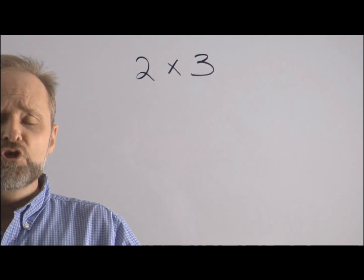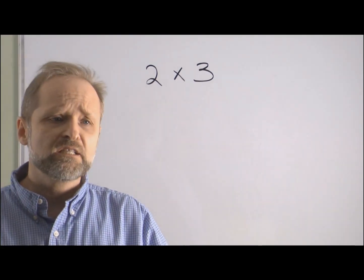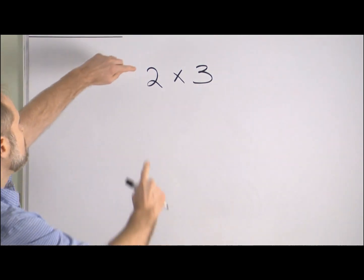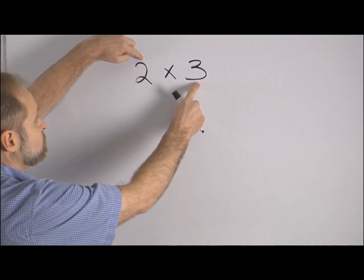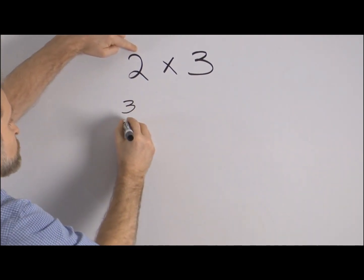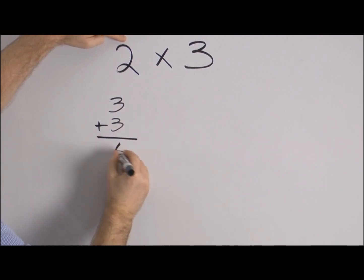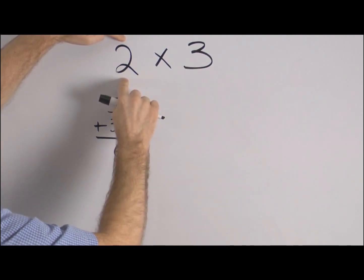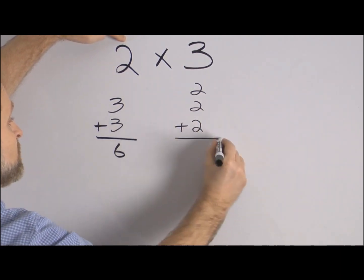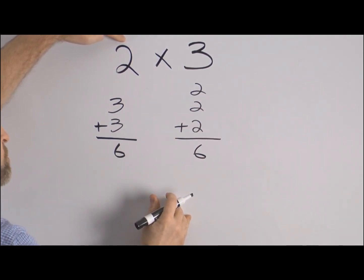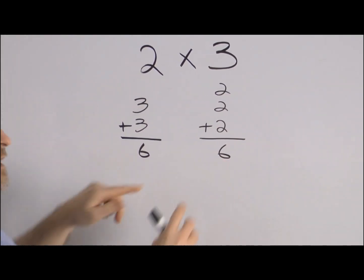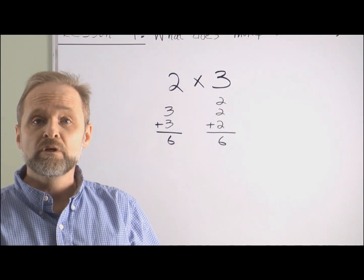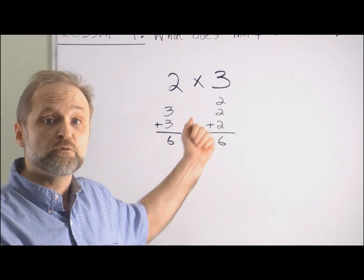What does multiplication really mean? Well, multiplication is quick addition of a certain number starting at that number. So let's try this. We can think of 2 times 3 as meaning two 3's — so 3 plus 3 — and add these together, we get a total of 6. Instead of thinking of this as two 3's, we can think of this as being three 2's. Add these together, we get a total of 6. So we can say that 2 times 3 is actually 6.